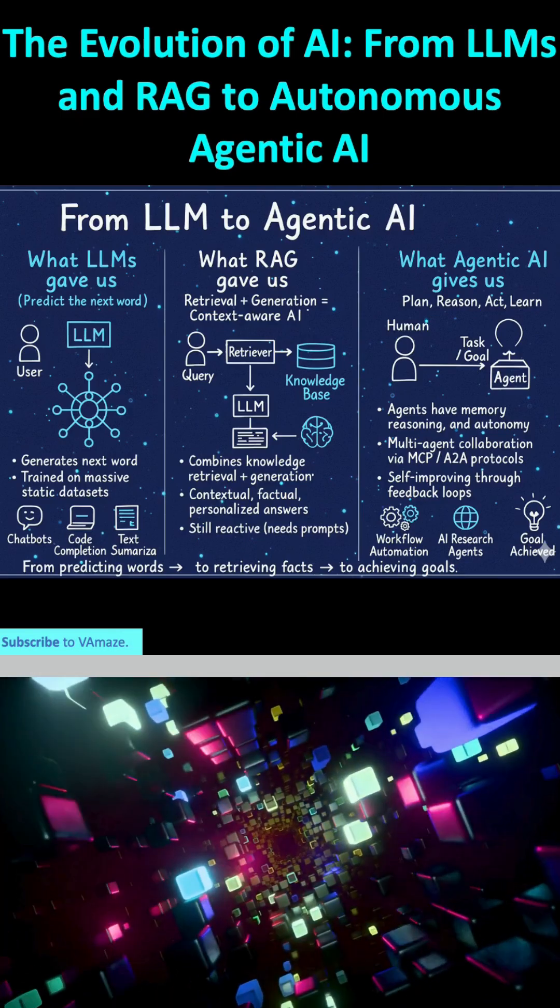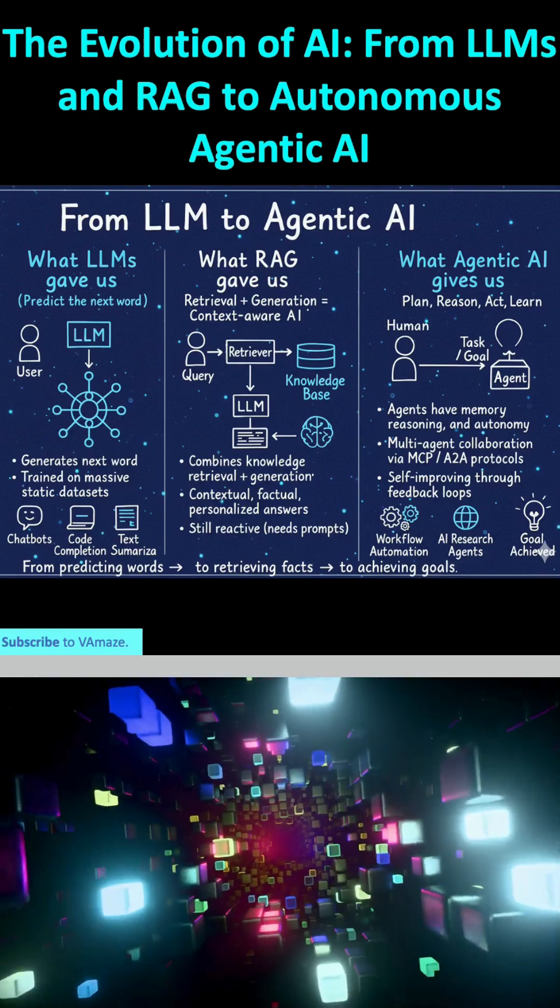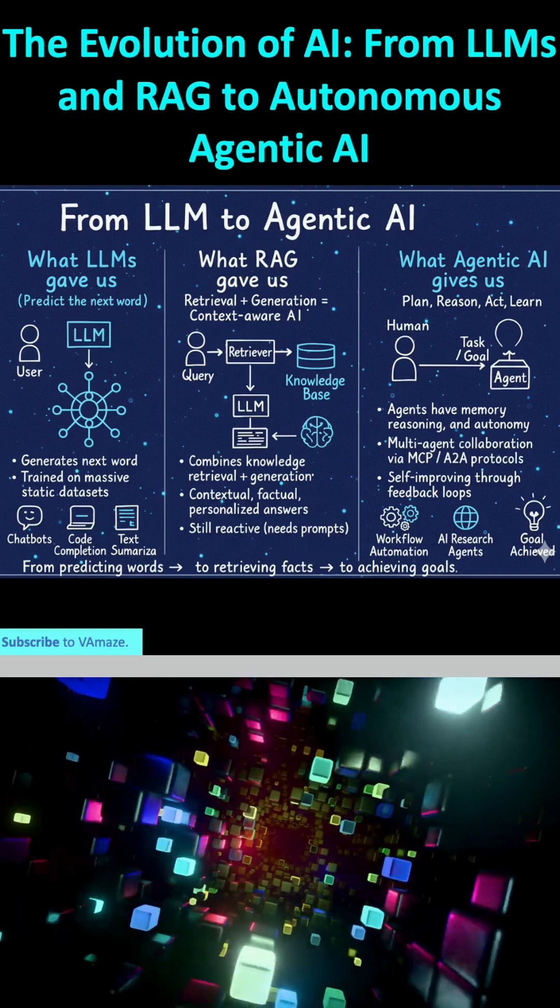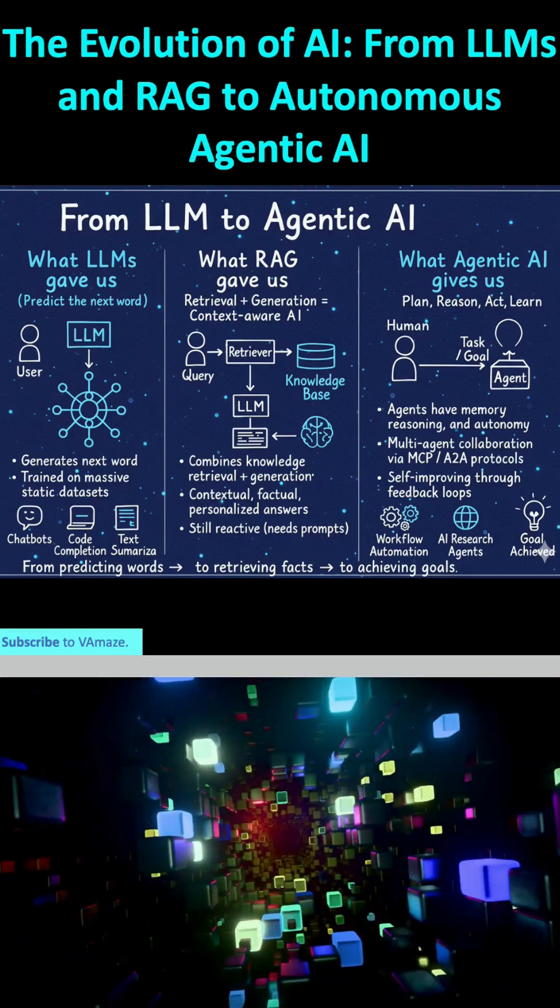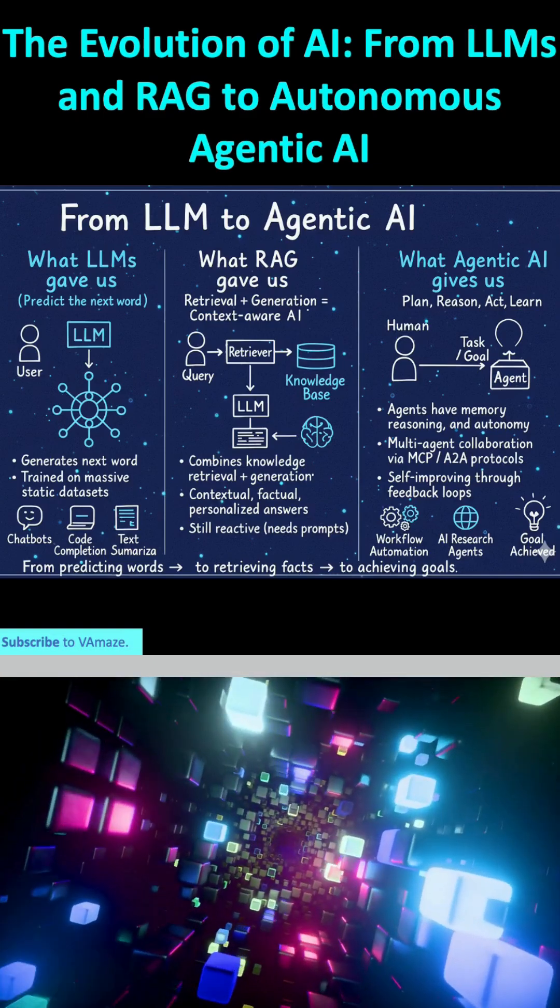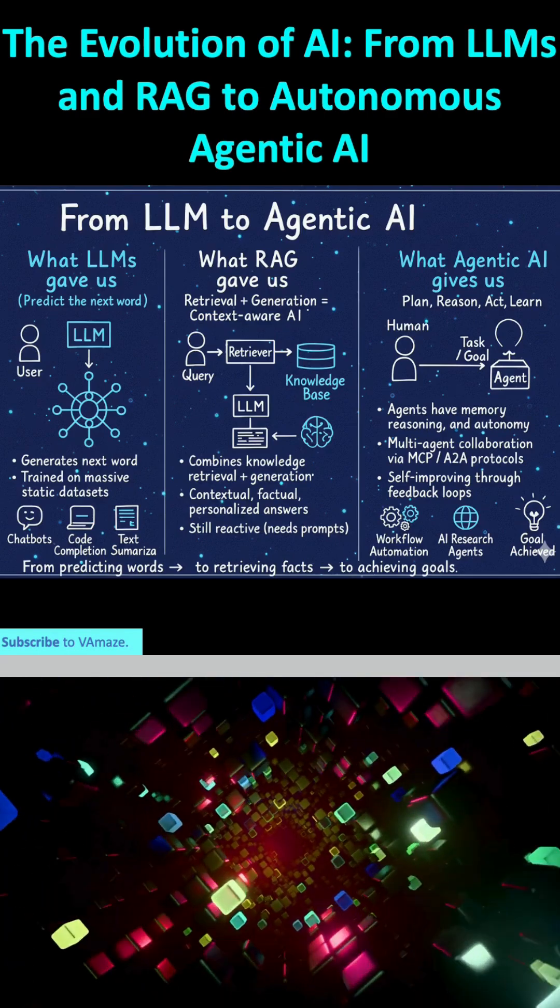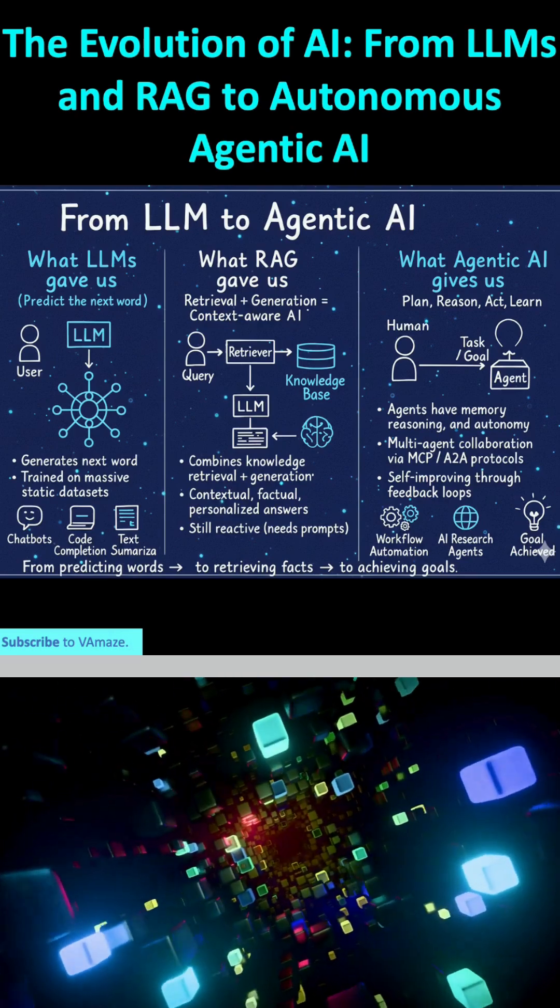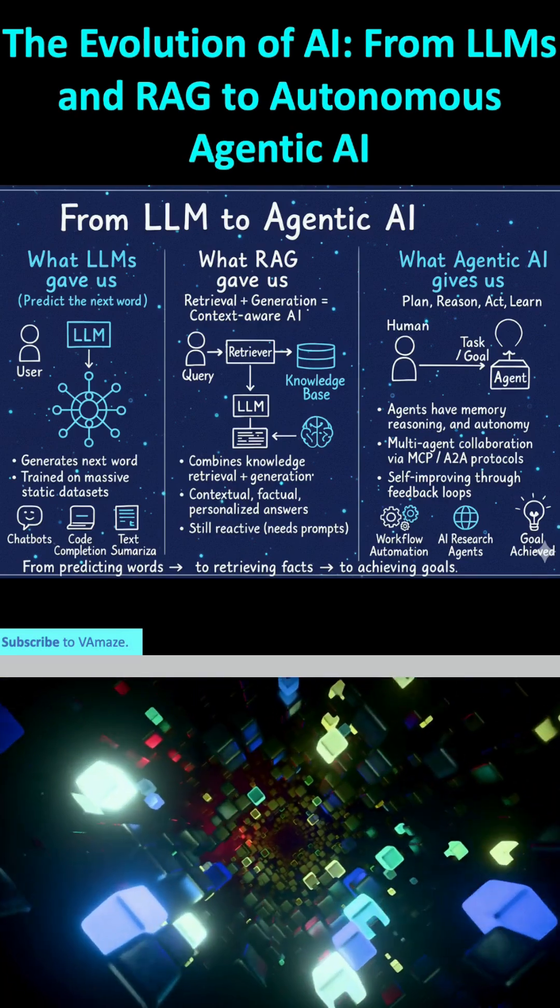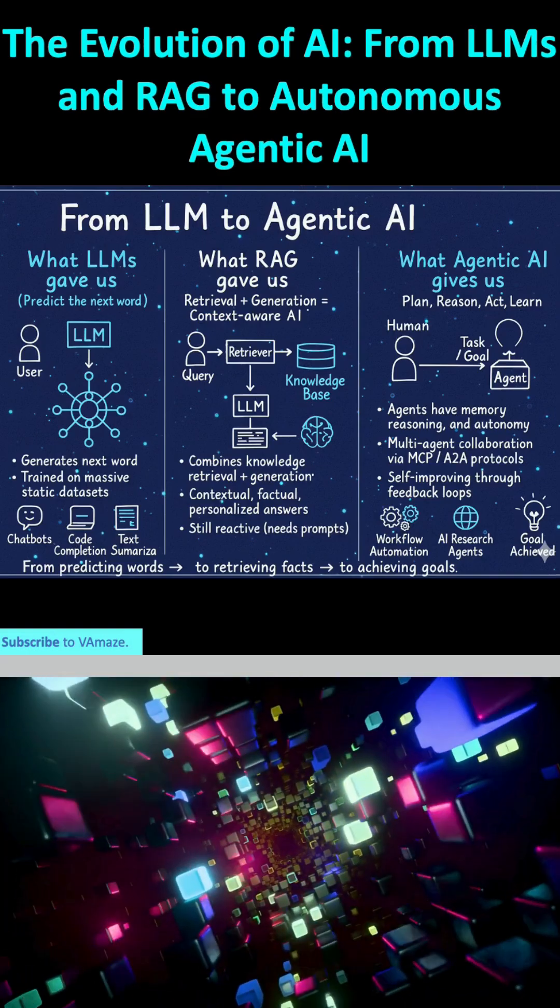These agents are distinguished by having memory, allowing them to recall past interactions and knowledge, robust reasoning capabilities, and a degree of autonomy to pursue their goals without constant human intervention. A key development enabling this is multi-agent collaboration, where different agents can work together communicating through protocols like MCP and A2A. This allows for complex tasks to be broken down and solved by specialized AI units.